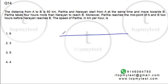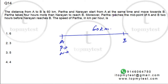So A to B is 60 kilometers. Partha and Narayan start from A at the same point and move towards B. Partha takes four hours more than Narayan to reach B. Moreover, Partha reaches the midpoint of A and B two hours before Narayan reaches B. We need to find the speed of Partha in kilometers per hour. Partha is obviously slower than Narayan because he takes four hours more.